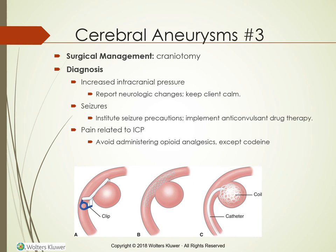Surgical repair of a cerebral aneurysm is attempted after the first hemorrhage because the danger of another hemorrhage from the weakened aneurysm is very great. However, manipulation of small cerebral vessels can result in increased vasospasm, thrombosis, and cerebral infarction. The risks of surgery are considered less serious than the dangers of recurring hemorrhage. Surgical approaches via craniotomy include clipping — clamping the aneurysm — as well as inserting an endovascular stent or filling the aneurysm with a coil, with or without a stent, to prevent potential rupture.